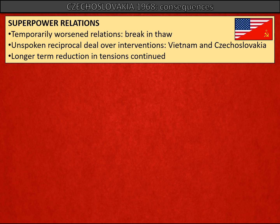Let's look at the consequences of the Soviet intervention. For superpower relations, relations between the superpowers temporarily worsened but soon repaired themselves. This was partly because America was deeply involved in the Vietnam War at this point, and there was an unspoken deal that the superpowers would be free to intervene in their own spheres of influence without the other stepping in. So in the longer term, the reduction in tensions continued.